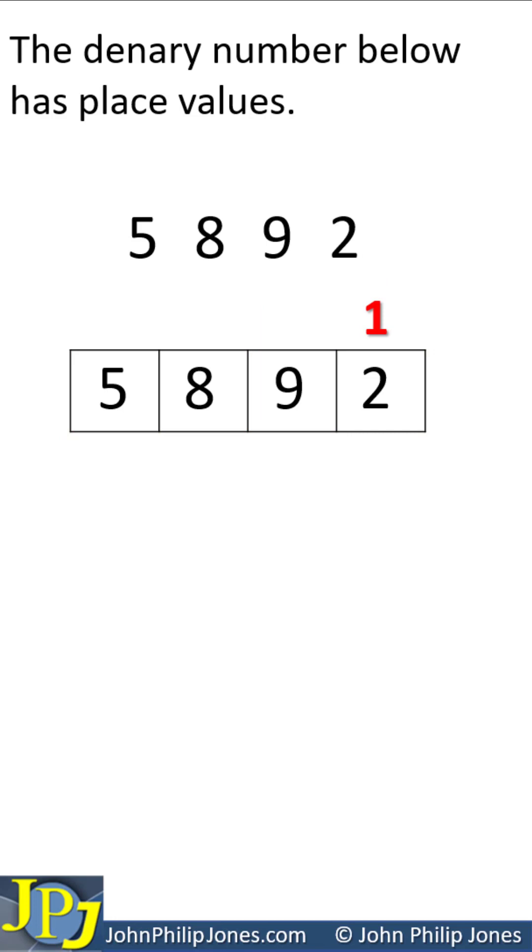The first column has the value of 1, often called the units column. The next column has a value of 10, which we can see is 10 times this column. What I'd like you to do is to pause the video and work out what needs to go into the position of the two question marks.